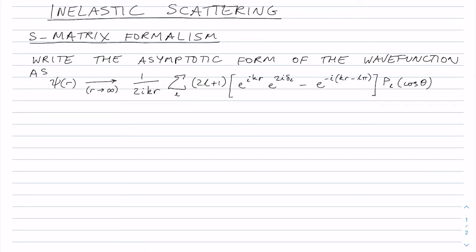So this is how we wrote the wave function in our previous video where the phase shift here delta l is in the outgoing wave and that's the phase shift relative to the incoming wave. And now I've introduced a term S L of K which is the scattering matrix.